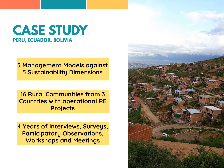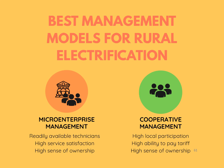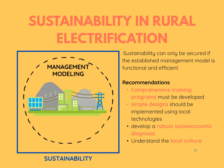In this case study, 16 rural communities from three countries — Peru, Ecuador, and Bolivia — were involved, all of which have existing operational renewable energy systems. Interviews, surveys, participatory observations, workshops, and meetings were carried out in these communities for over four years. Based on the study, the best management models for rural electrification are micro-enterprise and cooperative management models, as both scored the highest in most of the sustainability dimensions, greatly contributing to the participation of the local community. To further strengthen the sustainability of future projects, the paper recommends that comprehensive training programs be developed, simple designs and local technologies be used, robust socioeconomic diagnosis be conducted, and local culture be understood.